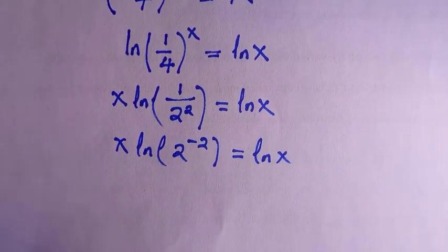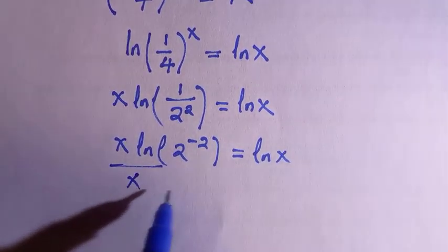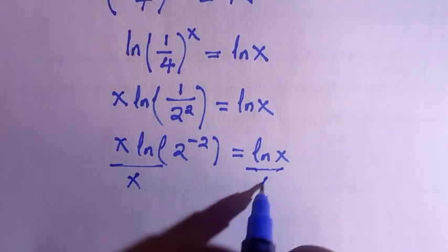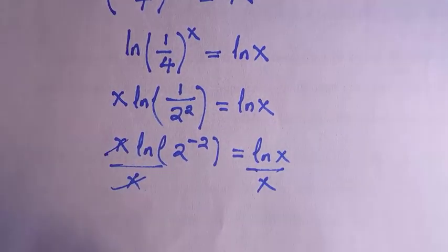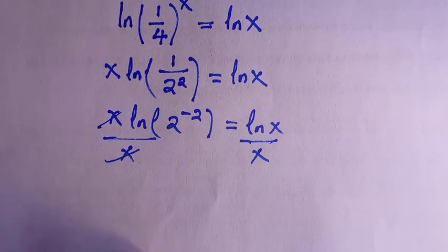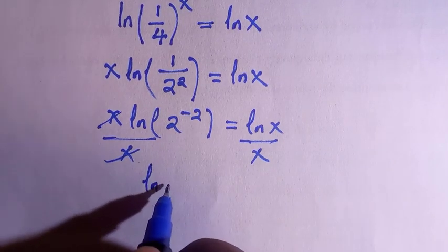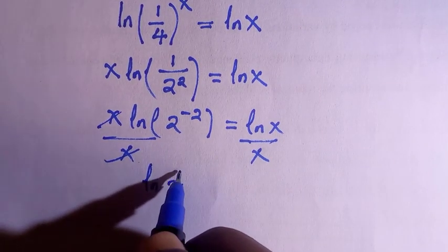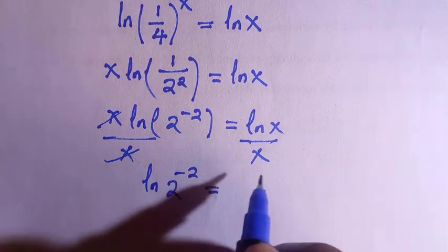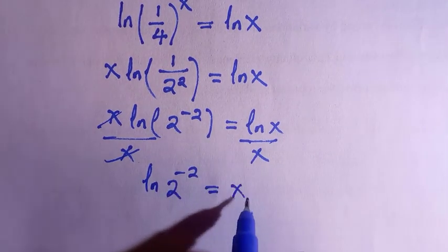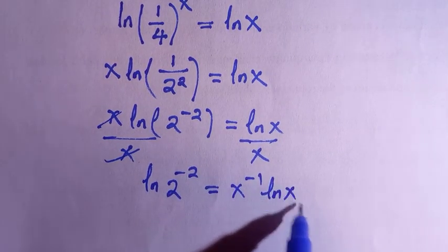Dividing both sides by x, so we isolate ln of 2 to the power of minus 2. After cancelling, we have ln of 2 raised to the power of negative 2 equals 2, and x at the denominator can also be written as x to the power of minus 1 times ln of x.